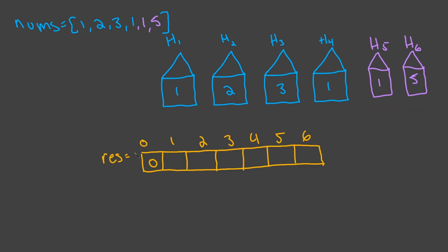I've drawn an array to keep track of the max we can rob up to each current house. House 1 corresponds to index 1, and the max we can rob is 1, since there are no prior houses. For house 2, the max is 2. For house 3, we can rob house 1 and then house 3, giving us a max of 4.